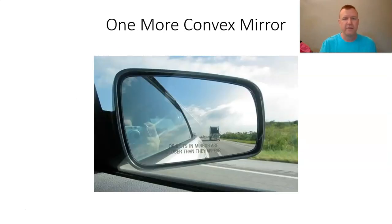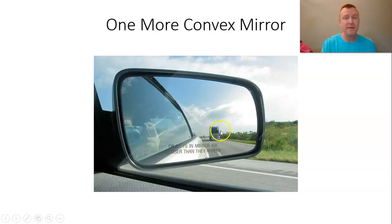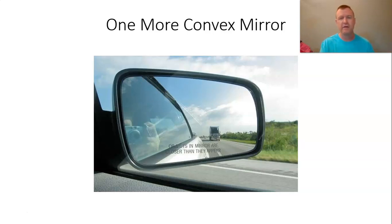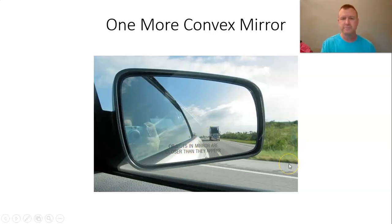A common example of convex mirrors is the passenger side rear view mirror in a car. You've probably read the words: 'objects in the mirror are closer than they appear.' Because the image is smaller — this is a convex mirror making a smaller upright image — the advantage is a wider field of view. But it makes that smaller image, so it appears the truck is farther away than it actually is, which is why they have to put those words on there.